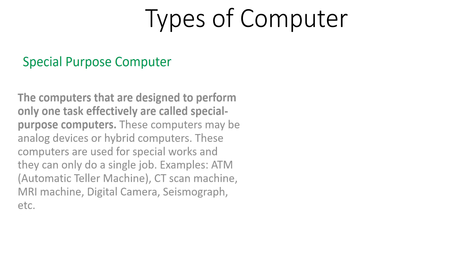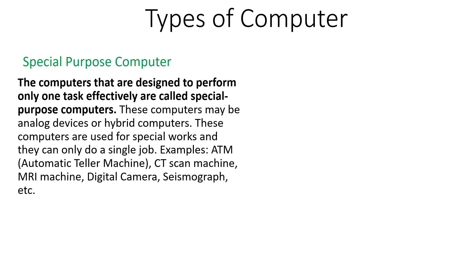Now let's see the types of computer on the basis of purpose. On this basis there are two types: special purpose and general purpose computer. The computers that are designed to perform only one task effectively are called the special purpose computer. They are designed to do a special or single task effectively.